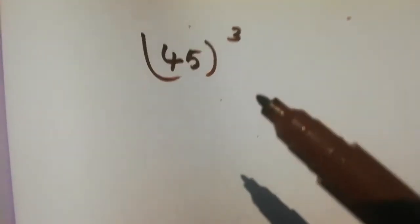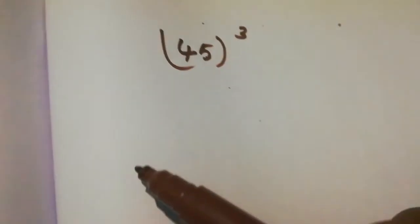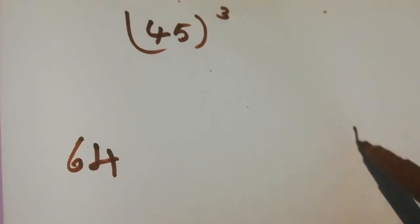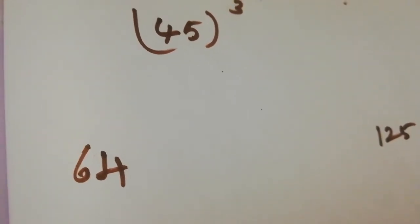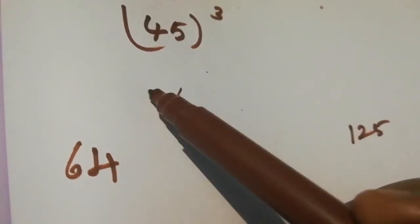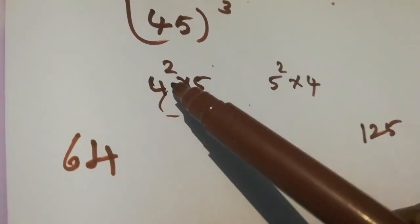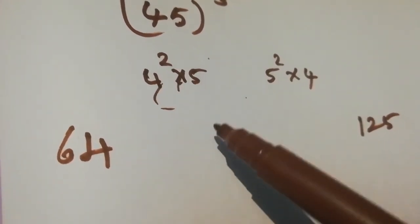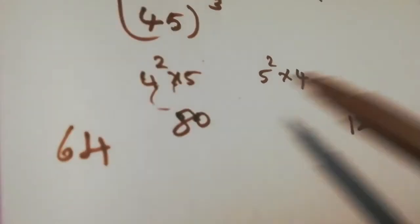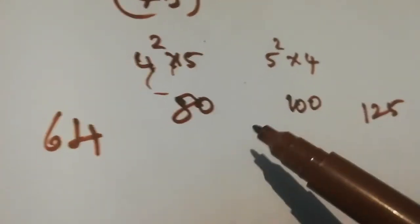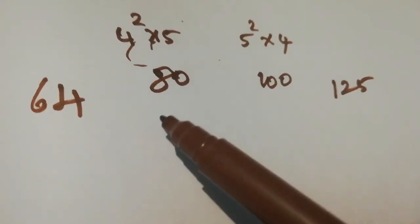Now let's see one more example: 45 cube. The first step is to write the cube of the digits. 4 cube is 64, 5 cube is 125. Next, 4 squared into 5: 4 squared is 16, 16 into 5 is 80. Then 5 squared into 4: 5 squared is 25, 25 into 4 is 100.